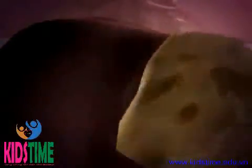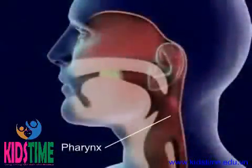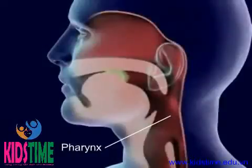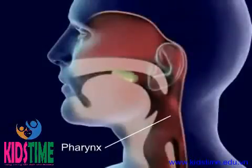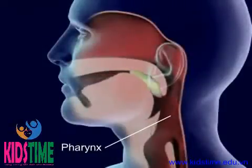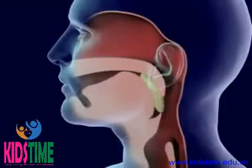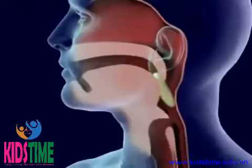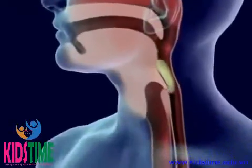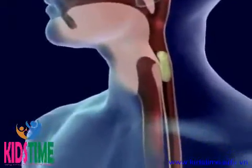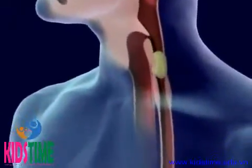Food is forced back into the throat, or pharynx, by the tongue. Food in the pharynx stimulates the swallowing reflex. The larynx is pulled upward to meet the epiglottis and seal off the trachea.